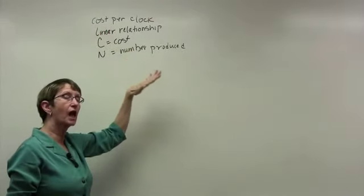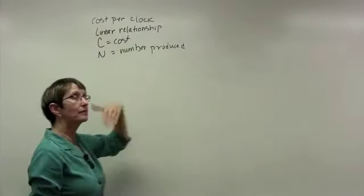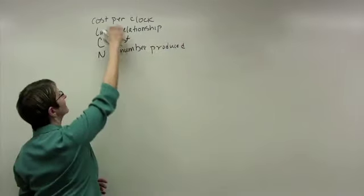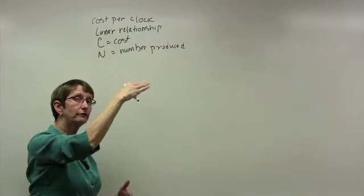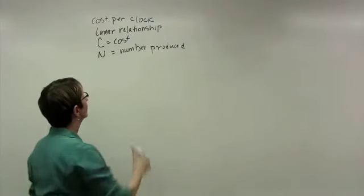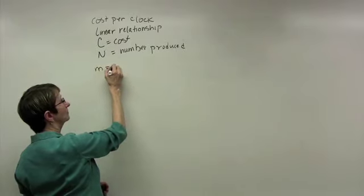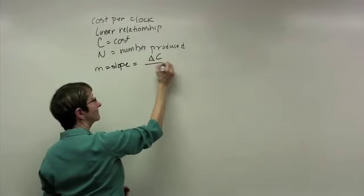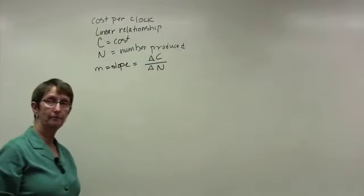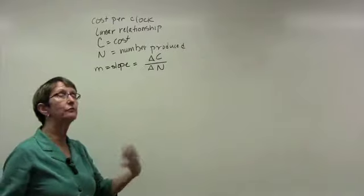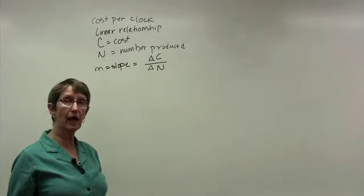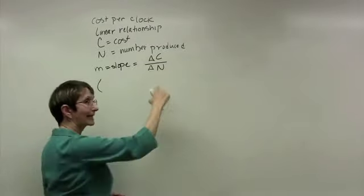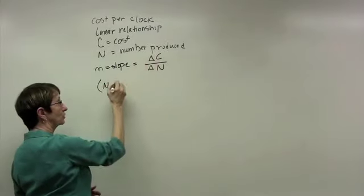So let's let c equal the cost and let n equal the number produced. If I want the cost per clock and I think about it as a linear relationship, what I'm looking for is that the cost is on top of a fraction and the number of clocks is on the bottom.